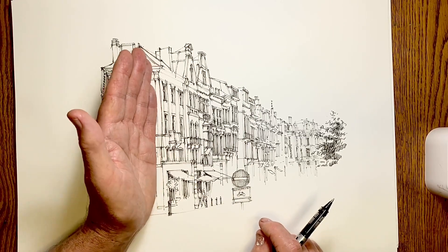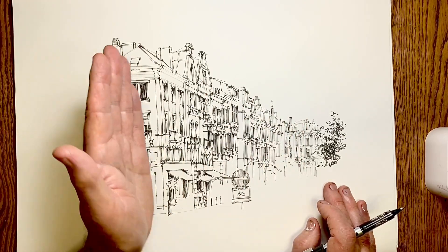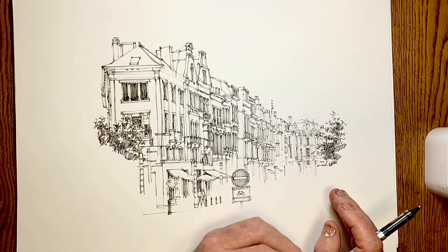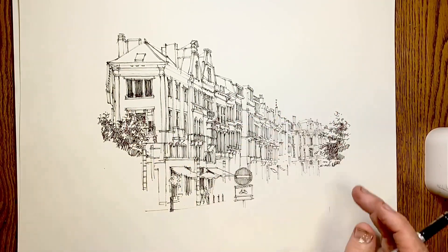But the further away we go, we see less and less detail and there's more and more compression. The buildings become narrower the further away they go and the windows become narrower.